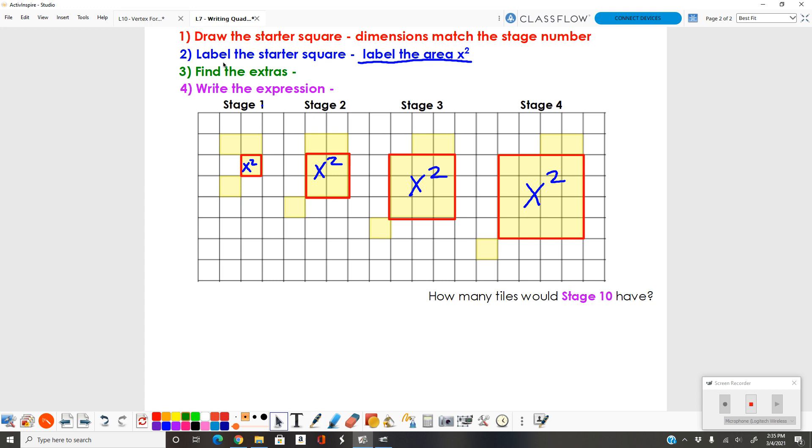Step three, find the extras. Instead of finding extra rows and columns, we're just going to be looking for the total number of extra boxes that we have. Here, I have my starter square plus three more boxes. On this one, I have my starter square plus three more boxes. All about patterns. You'll notice no matter what stage you're on, it's always a starter square plus three more boxes.